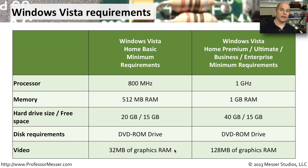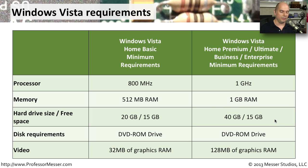All of the other editions of Windows Vista require a minimum of a 1 gigahertz processor, 1 gigabyte of RAM, at least a 40 gig hard drive with 15 gig of free space available, a DVD-ROM drive, and a graphics adapter with at least 128 megabytes of graphics memory.